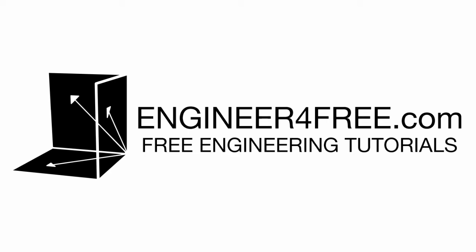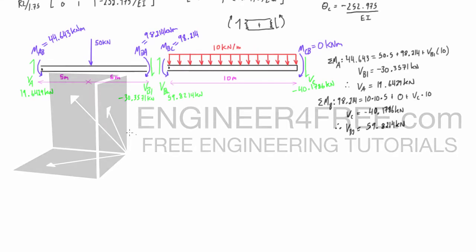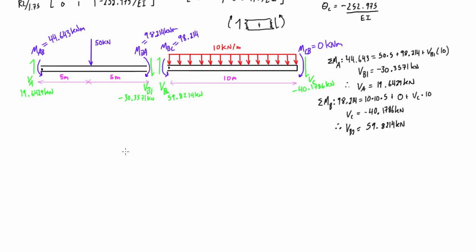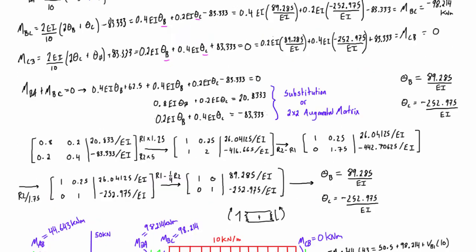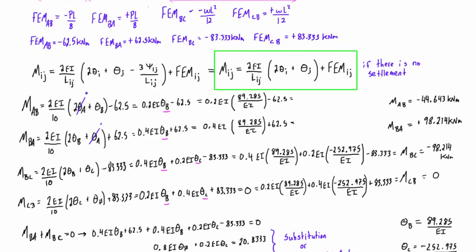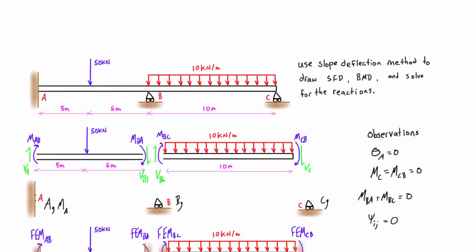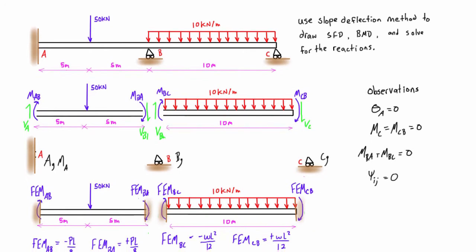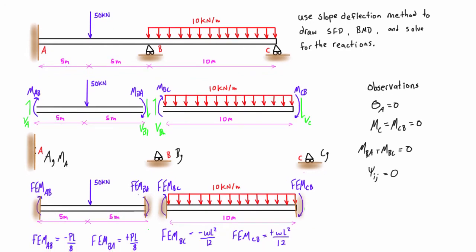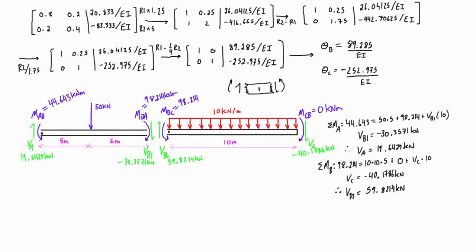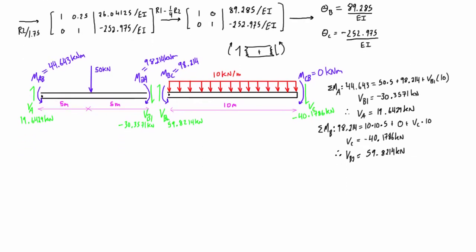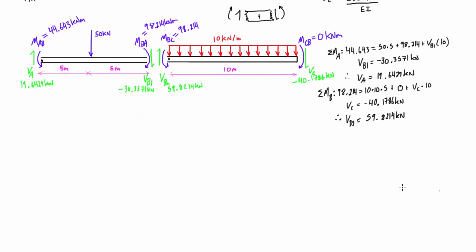All right guys, welcome back. This is Part 3, the final part of our second slope deflection method example problem. Just a quick recap — this is exactly where we left off, and this is all the work we did in the last two videos, starting with this statically and kinematically indeterminate beam. We want to draw the shear force diagram, bending moment diagram, and solve for the reactions in this video.